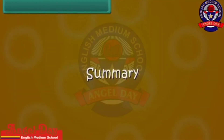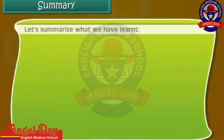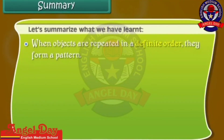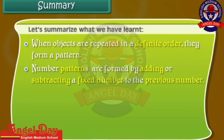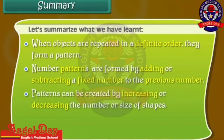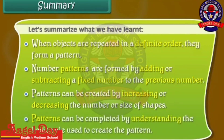Summary. Let us summarise what we have learnt. When objects are repeated in a definite order, they form a pattern. Number patterns are formed by adding or subtracting a fixed number to the previous number. Patterns can be created by increasing or decreasing the number or size of shapes. Patterns can be completed by understanding the basic rule used to create the pattern.